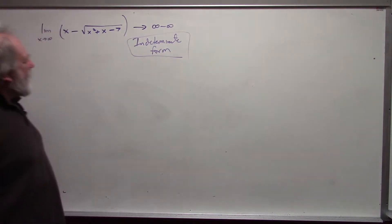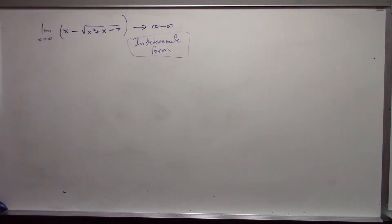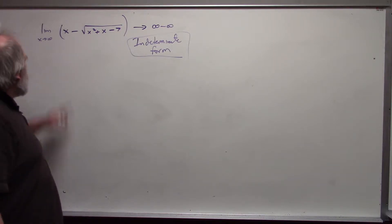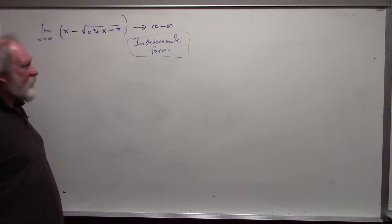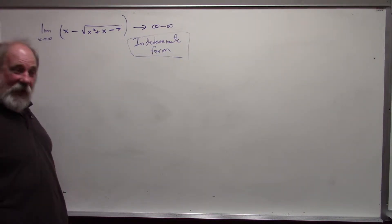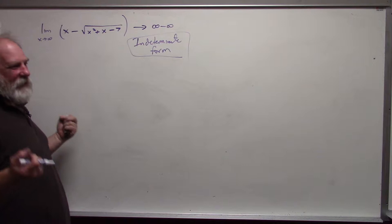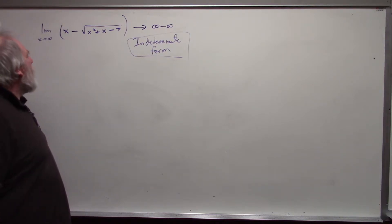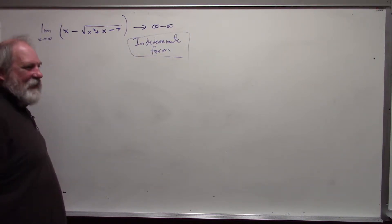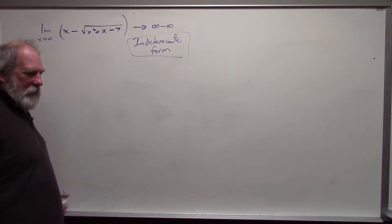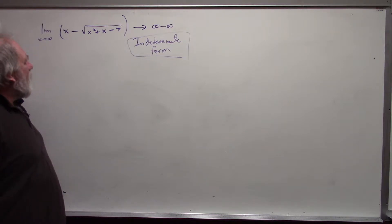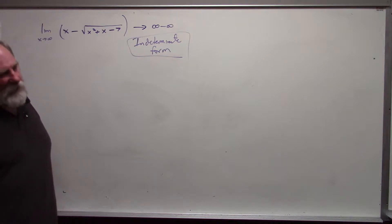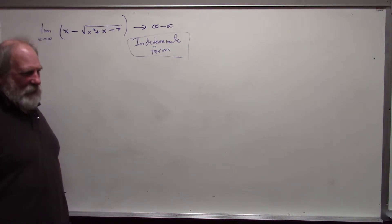In this form, I cannot tell what's happening. Think of this like a tug-of-war: the first part wants to pull the function to positive infinity, the second part wants to pull it to negative infinity. They are literally pulling themselves apart. What often happens is they end up in a stalemate and the limit is some real number. But we have to do some algebra to figure out that value.